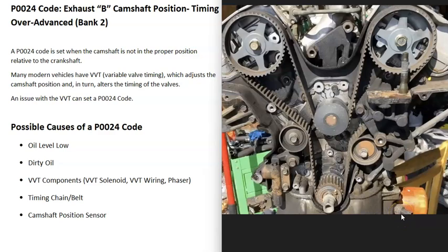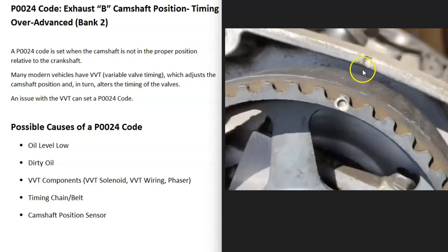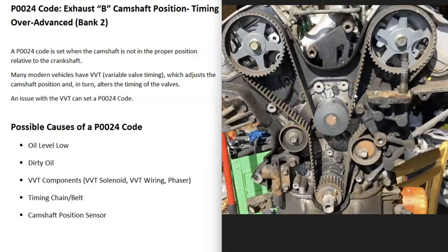The next possible cause is a bad timing chain or timing belt. These have timing marks that all need to line up. If the chain or belt slips a notch — even slightly before or after — it's going to throw off the timing and cause problems. Also, when timing belts or chains get really old, they can stretch, which throws off the timing and can cause a P0024 code.